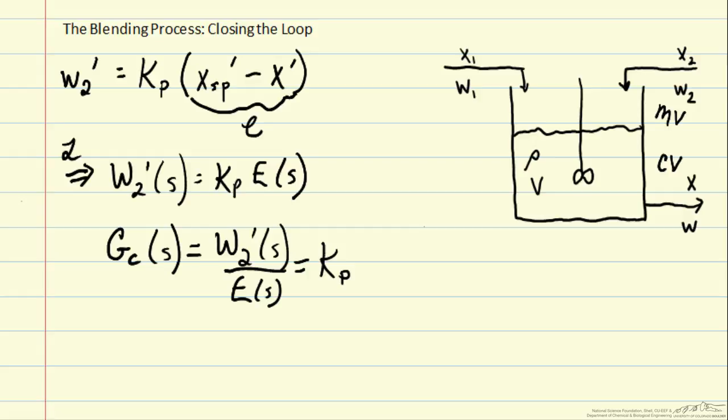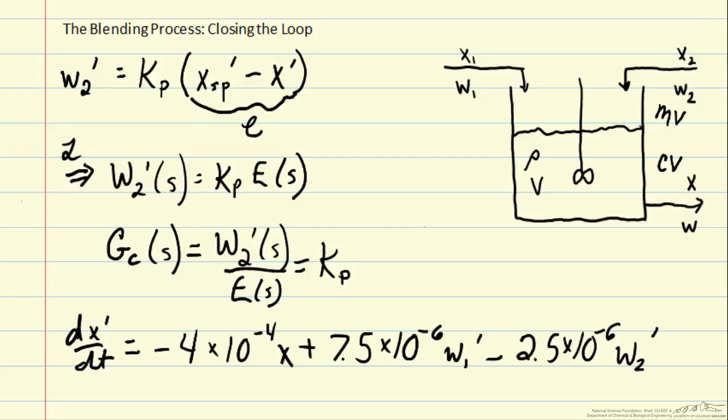The transfer functions are helpful when constructing block diagrams, when we put together our process model with our controller model. So previously we had considered a linear model of the process, dx prime dt equals - so here the value of x depends not only on the current value, but the change in x also depends on the two flow rates coming in.